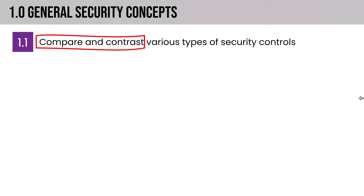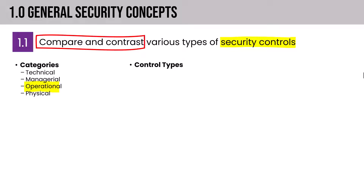Section 1.1 focuses on comparing and contrasting the various types of security controls. We'll start with the categories, which include technical, managerial, operational, and physical. What's different here versus past versions of the exam is the inclusion of the operational category — a more granular way of considering the control types, which have not changed. They are preventive, deterrent, detective, corrective, compensating, and directive.